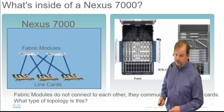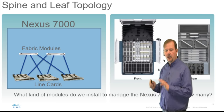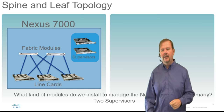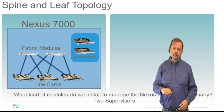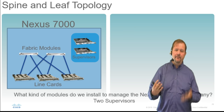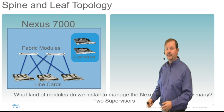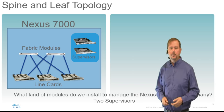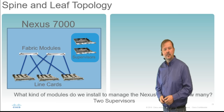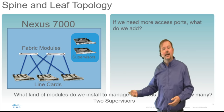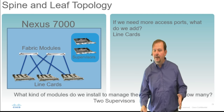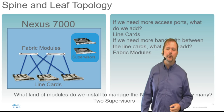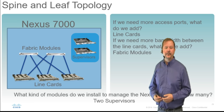When I want to manage the 7K, I install supervisor modules — a pair of them. Why two? If one fails, the other takes over — fault tolerance. So this is our basic topology for a Nexus 7K: spine and leaf topology with supervisors for management. If I need more access ports for servers, I add more line cards. If I need more bandwidth between the line cards, I add fabric modules. You have been selling spine and leaf for years — you just may not have known it.